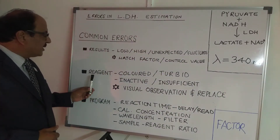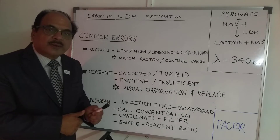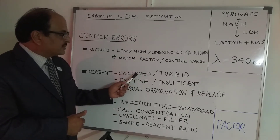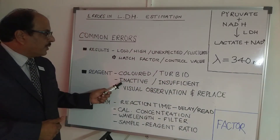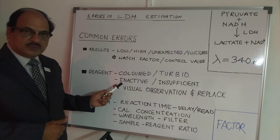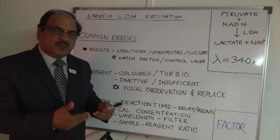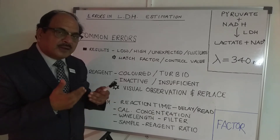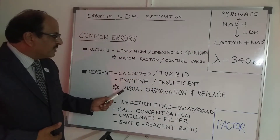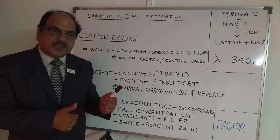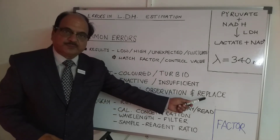The second category is reagent-oriented errors. Although LDH reagent is a two-reagent system, it is transparent. Any abnormal color, turbidity, gross contamination causing inactivity, or insufficient reagent — such as air being sucked in during the last few milliliters — can cause errors. These can be eliminated by visually inspecting the reagent in a test tube or beaker. If turbid, colored, or abnormal, discard and replace the reagent.